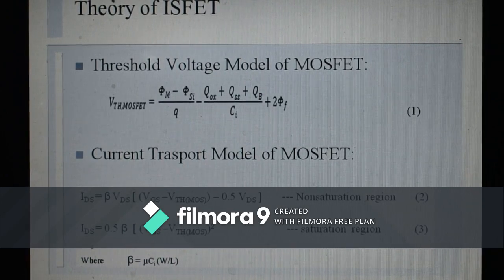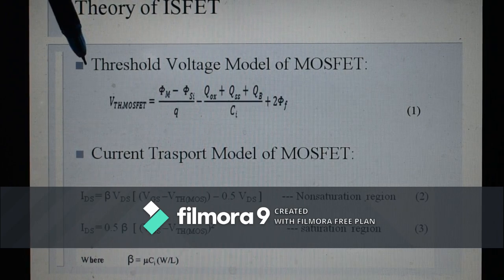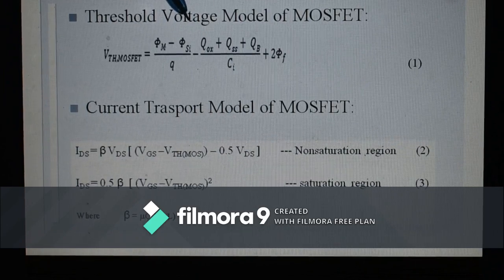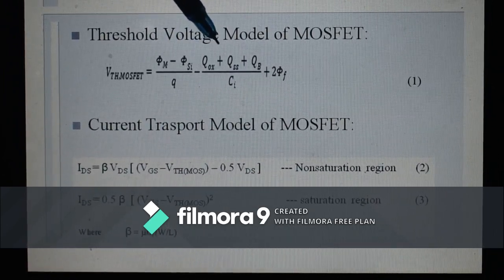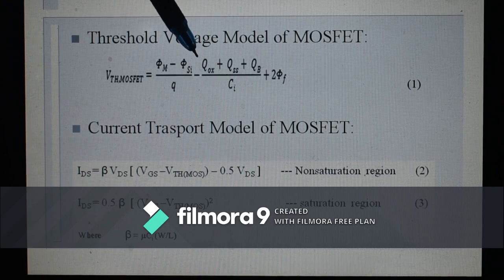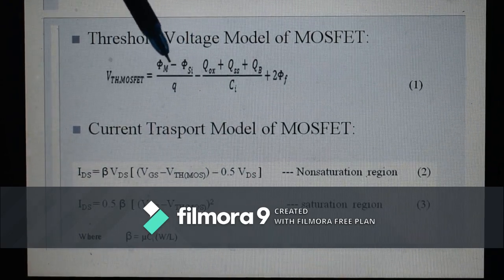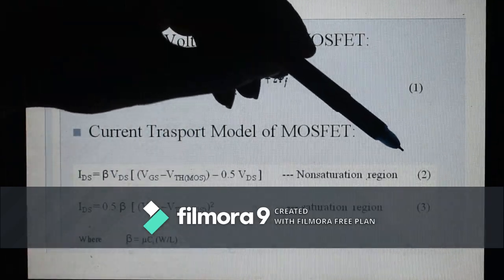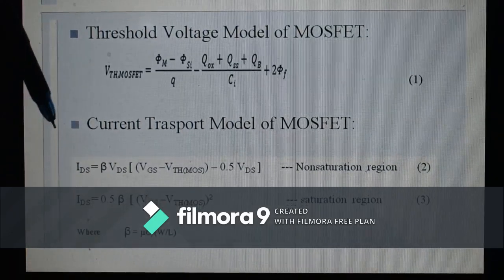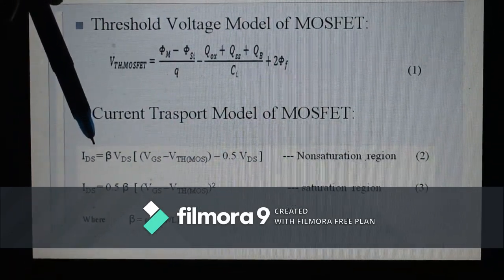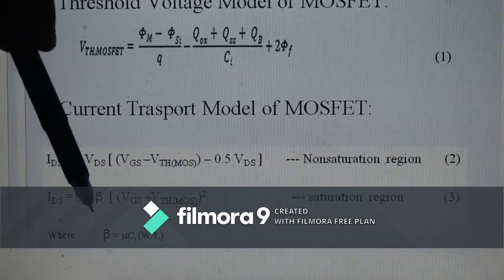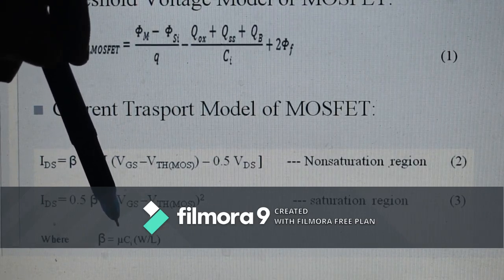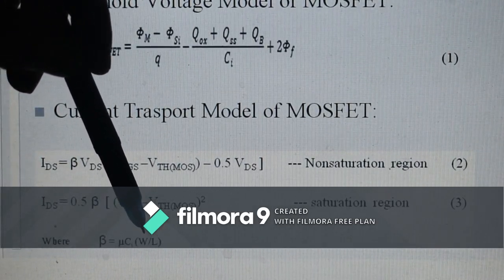As far as MOSFET's current equation is concerned, we know that this characteristic has two regions: non-saturation and saturation region. The corresponding equations in both regions are given by equation 2 and equation 3, where beta is a design constant given by μ, the mobility of electron, times CI times W over L.